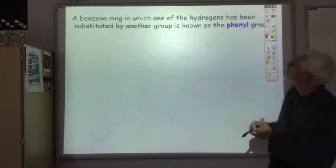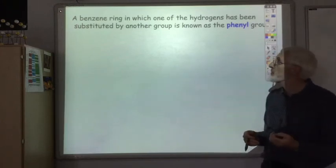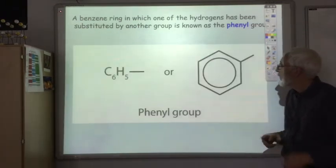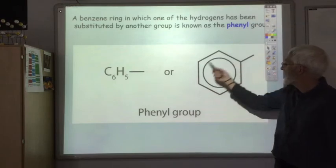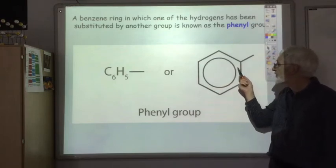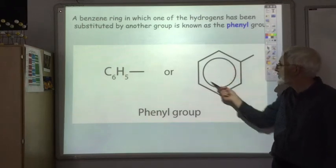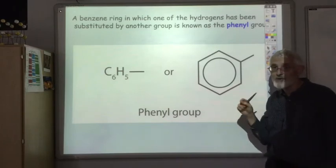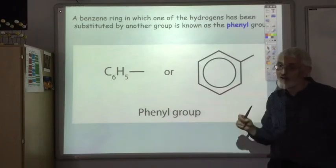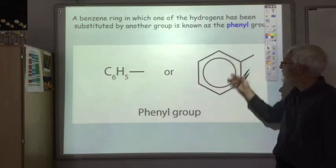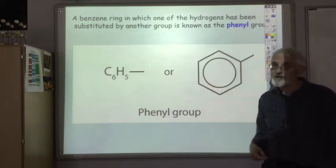A benzene ring in which one of the hydrogens has been substituted by another group is known as a phenyl group. This is the proper way to draw the benzene ring: a hexagon with a circle inside it represents the benzene ring, not the alternating single and double bonds which is misleading.